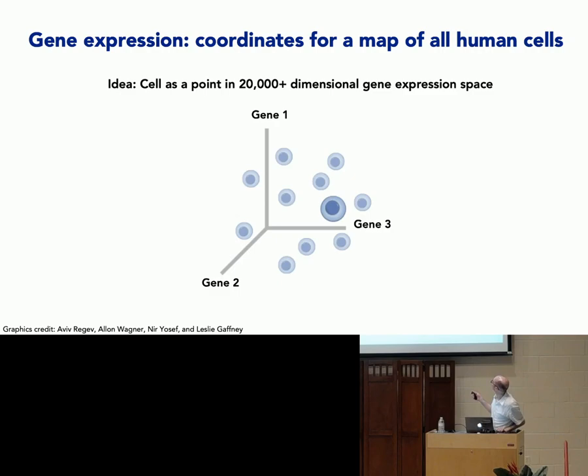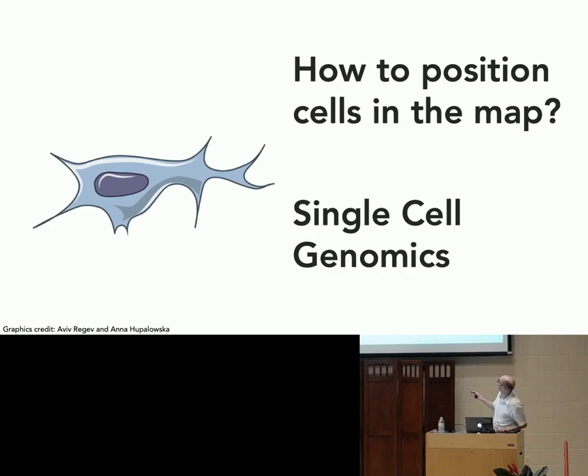So a cell is something we can think about in terms of how similar it is to other cells. But how do we measure those genes in cells? Cells are really small, and we need some way of measuring that.